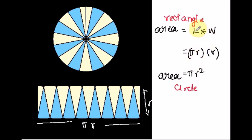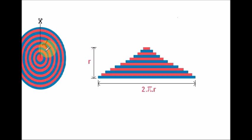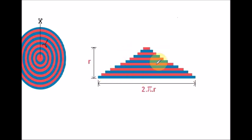Now let us find the area of a circle using triangles. Fill the circle of radius r with concentric circles. After cutting the circle along the indicated line and spreading the rings out, if you arrange them one above the other, you get a triangle. The base of the triangle equals the circumference of the circle, which is 2 pi r, and the height equals the radius r.